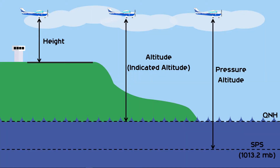Pressure altitude is indicated on the altimeter when its subscale is set to the standard pressure setting of 1013.2 millibars. Pressure altitude is the vertical distance above the standard pressure datum, sometimes referred to as 1013.2 hectopascals. Pressure altitude is typically expressed as flight level, which is pressure altitude divided by 100.